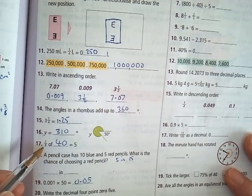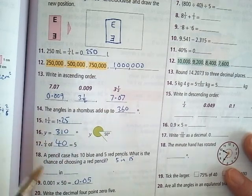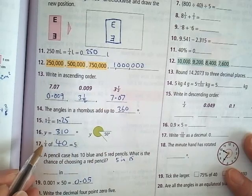1 eighth of what is 5? Well, 1 eighth of 40 is 5. And you get that by multiplying 5 by 8.